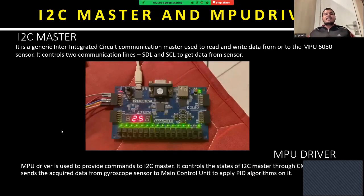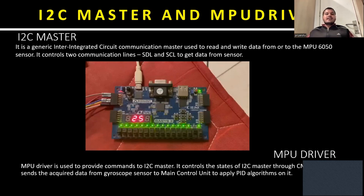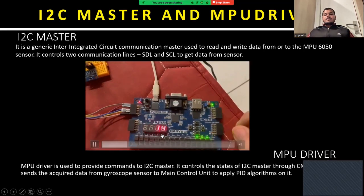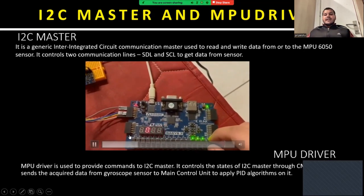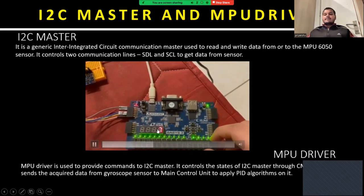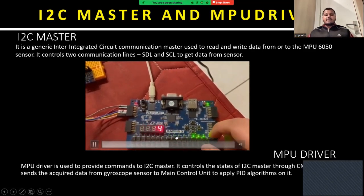The next part is I2C communication, which contains two modules: the I2C master and the MPU driver. The I2C master is a generic inter-integrated circuit communication master used to read and write data from the MPU-6050 sensor. It controls two communication lines, SDA and SCL, to get data from the sensor. The MPU driver is used to provide commands to the I2C master and controls its states through a command signal. It sends the acquired data from the gyroscope sensor to the main control unit to apply PID algorithms. As shown in the video, we are seeing the 16-bit output of each axis from the gyroscope sensor — 8 bits of which are MSB and 8 bits are shown on the 7-segment display.